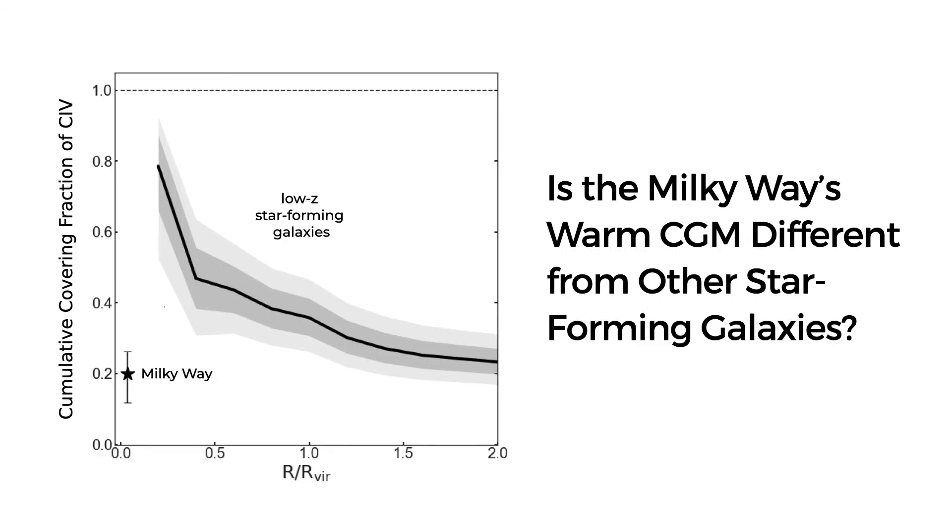To place these data in a broader context, we compare our carbon-4 covering fraction in the Milky Way, represented here with a star, to the covering fraction of existing carbon-4 measurements in the halos of other low-redshift star-forming galaxies, represented by the black line. Looking at the cumulative covering fraction as a function of normalized impact parameter, we find the galactic covering fraction of 20% is much lower than measurements of other galaxies would suggest.